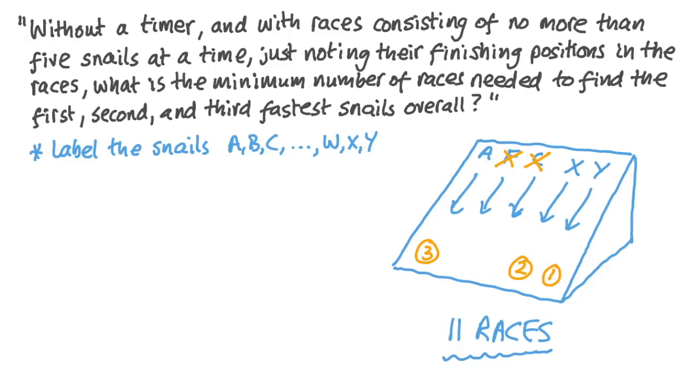Now, it's tempting to say that we could run five races, then put the winners of each race against each other in a grand final. Now, that would certainly help us identify the fastest overall snail, but it doesn't necessarily tell us about the second and third fastest. For example, if A, B, and C were the fastest three snails overall, then we'd have rejected two of them for the grand final under that system. So six races isn't the answer.